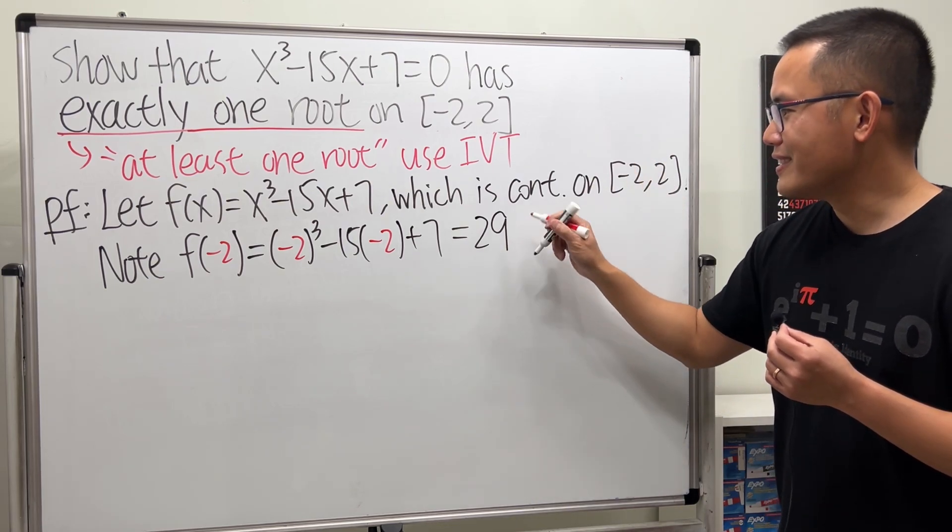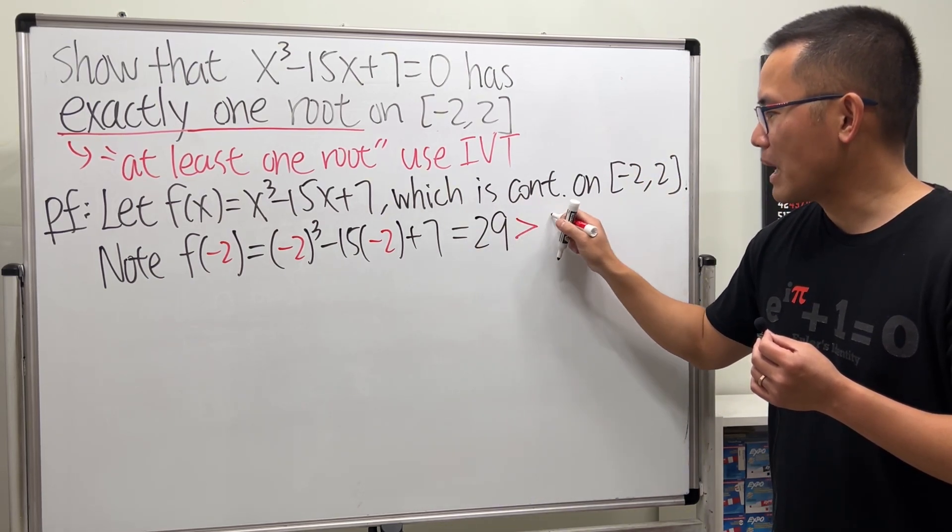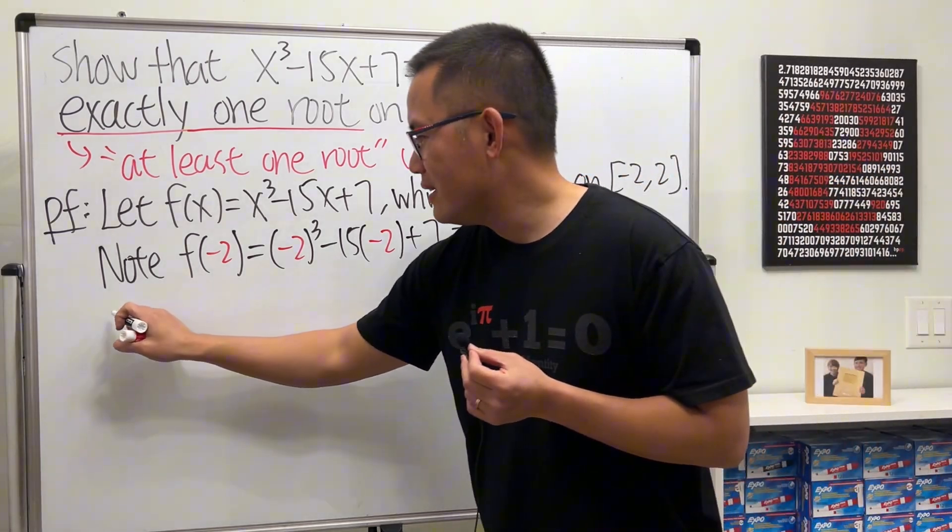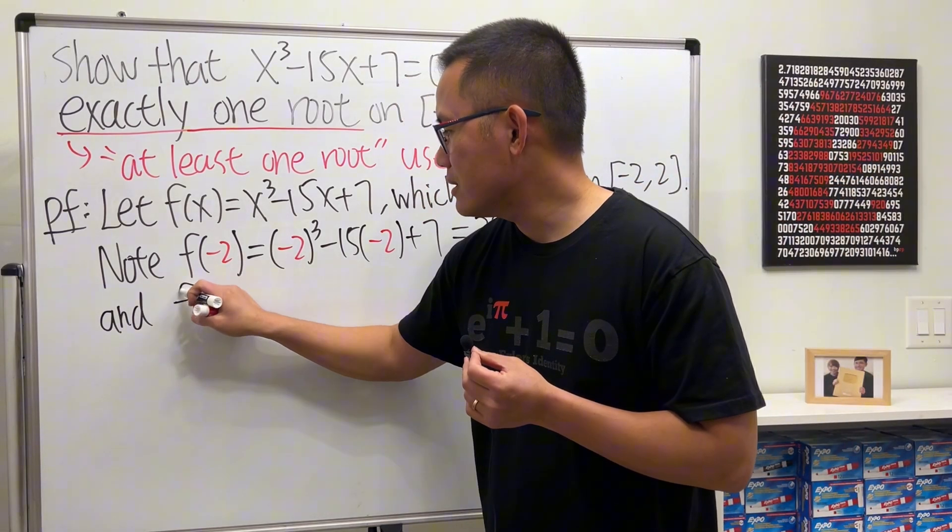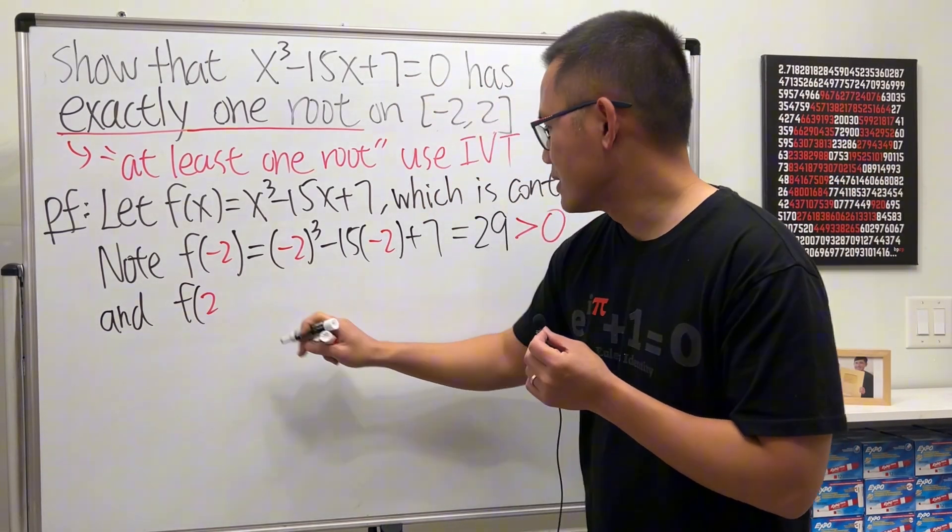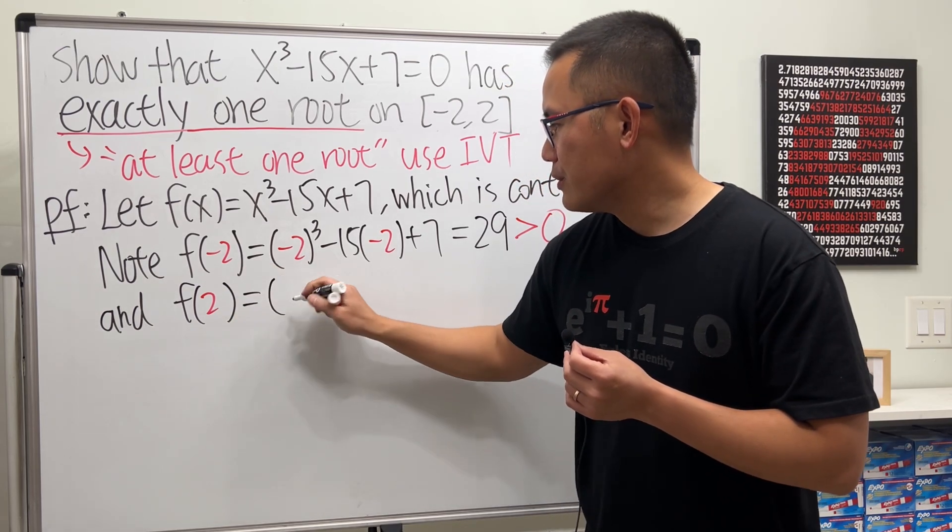But don't just mention 29. In my opinion, you should really mention that this is positive. Now hopefully when we plug in the other endpoint we get a negative result.